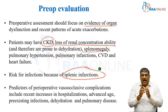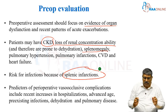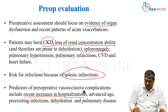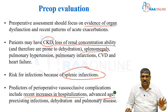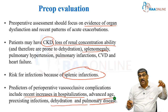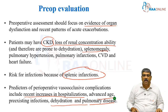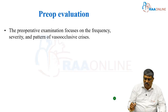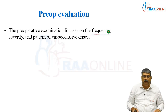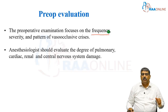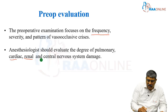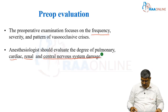What are the risk factors for vaso-occlusive complications? Recent increase in hospitalization, elderly patient, pre-existing infection, dehydration, and pulmonary disease — these are all the various factors which increase the vaso-occlusive crisis. Your preoperative examination should focus on the frequency, severity, and pattern of vaso-occlusive crisis. You should evaluate the degree of cardiac, pulmonary, renal, and central nervous system damage.